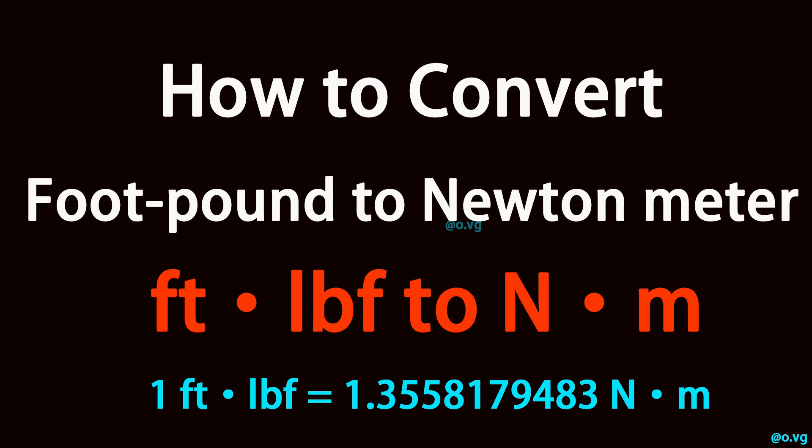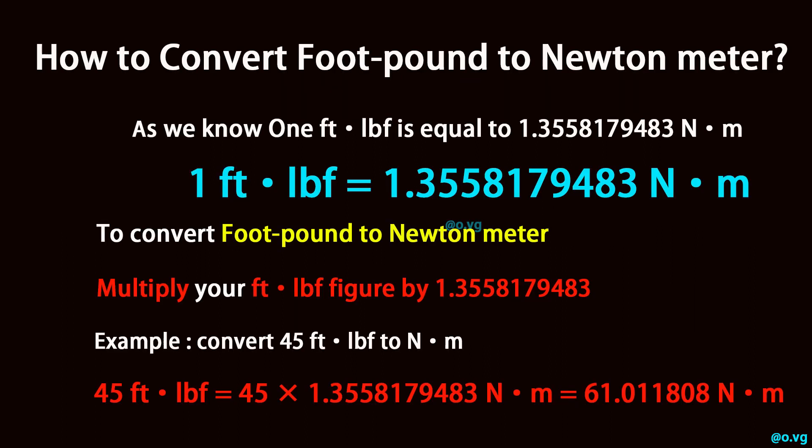How to convert foot-pound to newton-meter. One foot-pound is equal to 1.3558179483 newton-meter.